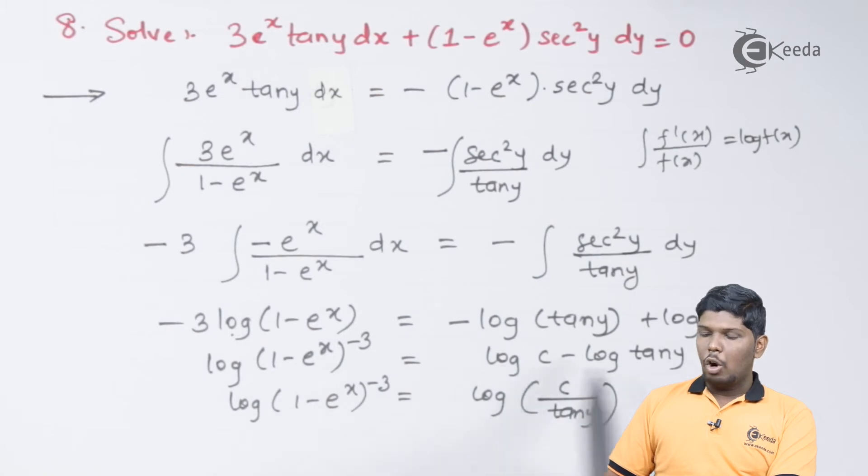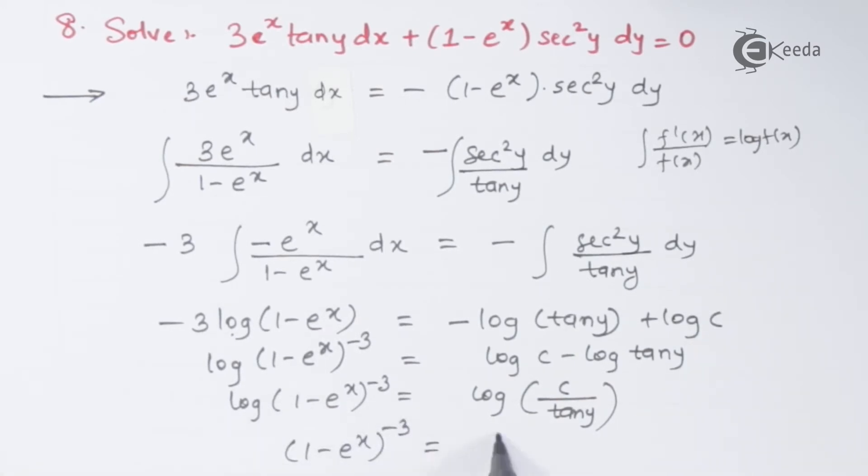On the right hand side, you can see we have log a minus log b that will give you log a by b. And now, we can take anti-log on both sides so that log will be eliminated. We have 1 minus e raise to x the whole raise to minus 3 is equal to c upon tan y.